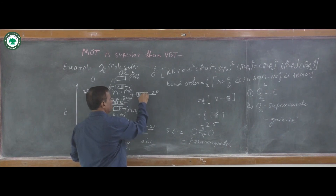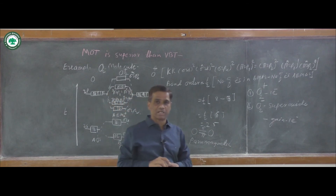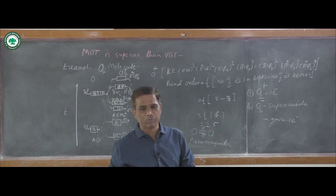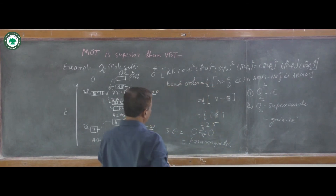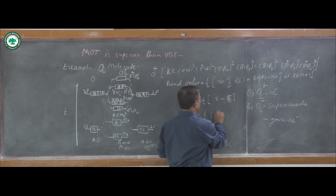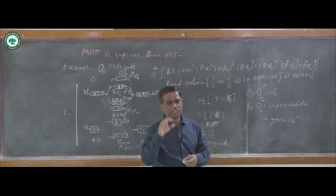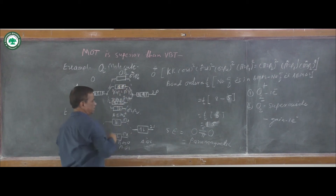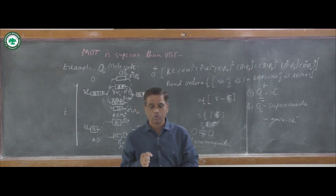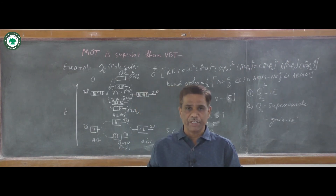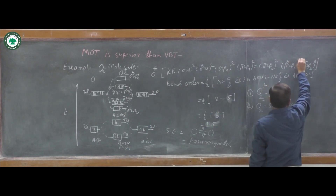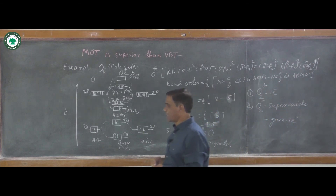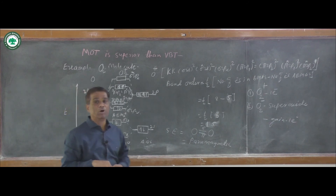In superoxide O2-, total 5 electrons are in the 2p anti-bonding region. One electron more compared to O2 molecule. Bond order = one-half times (8 minus 5) = one-half times 3 = 1.5, meaning there is a decrease in bond order. But one unpaired electron is present, so O2- superoxide is again paramagnetic in nature. The electronic configuration shows pi star 2py2 and pi star 2pz1.